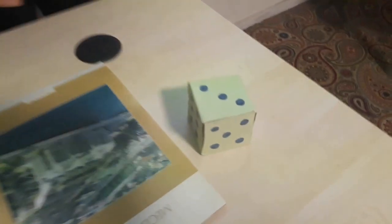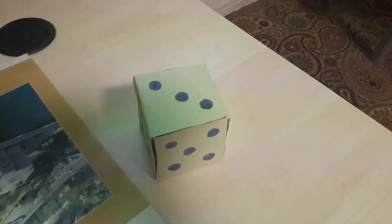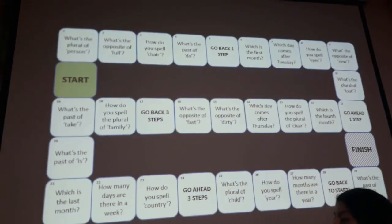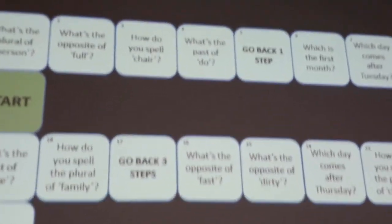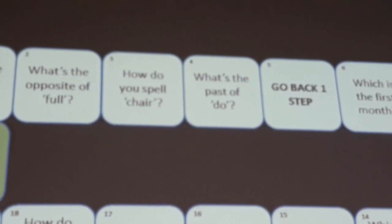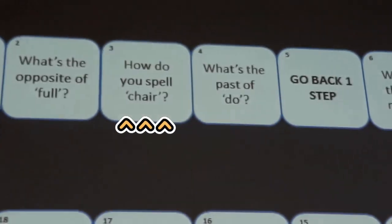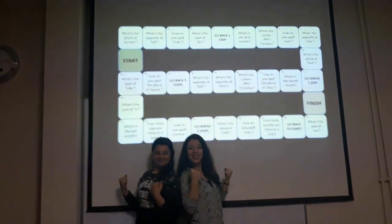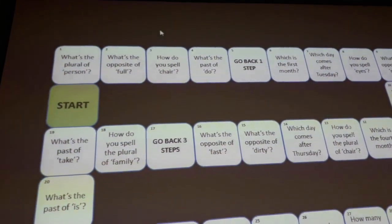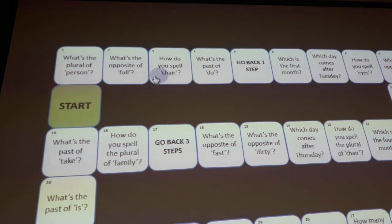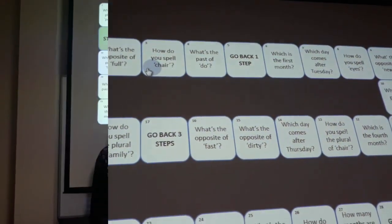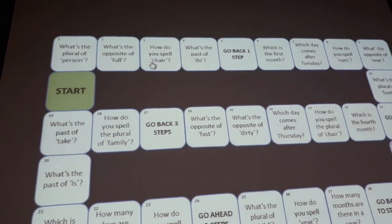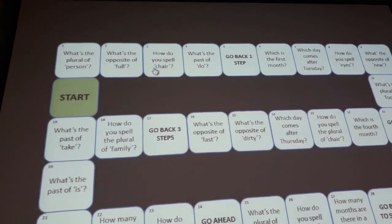To start the game, the student rolls the die again and tries to answer the question on the square which she or he got by rolling the die. If the answer they give is correct, the teacher marks their square. If the answer is incorrect, the student goes back to the previous square.